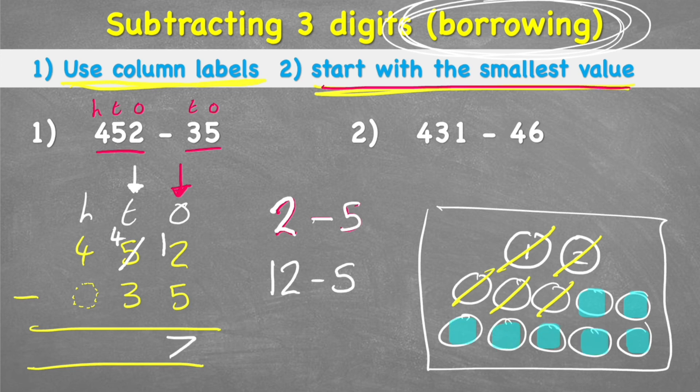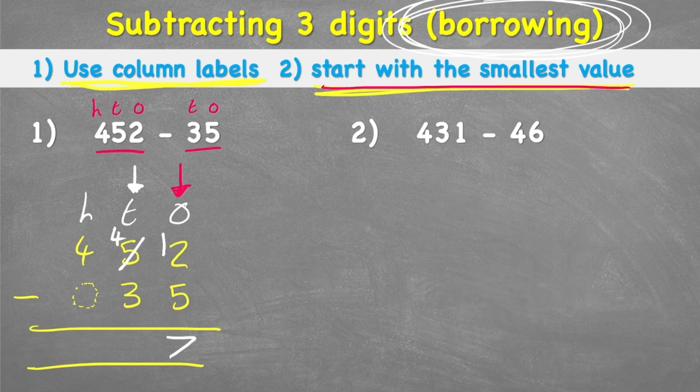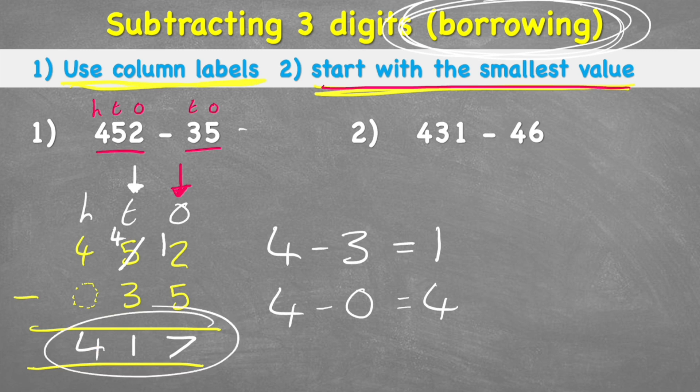Whew, that was tricky, wasn't it? Just to get that first part of the answer, wow. Now I can look at my next column, which shows 4 subtract 3. Well, 4 subtract 3 equals 1. And then my last column says 4 subtract 0, and that equals 4. So my answer to 452 subtract 35 is 417. Put the answer up here.